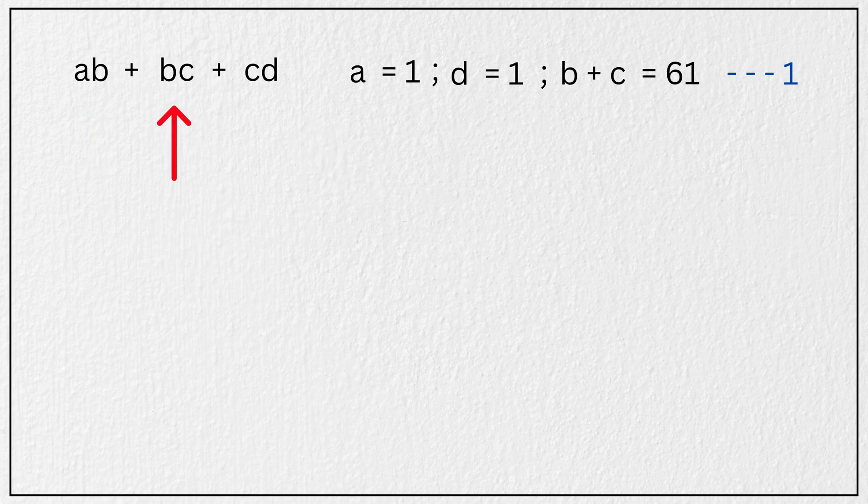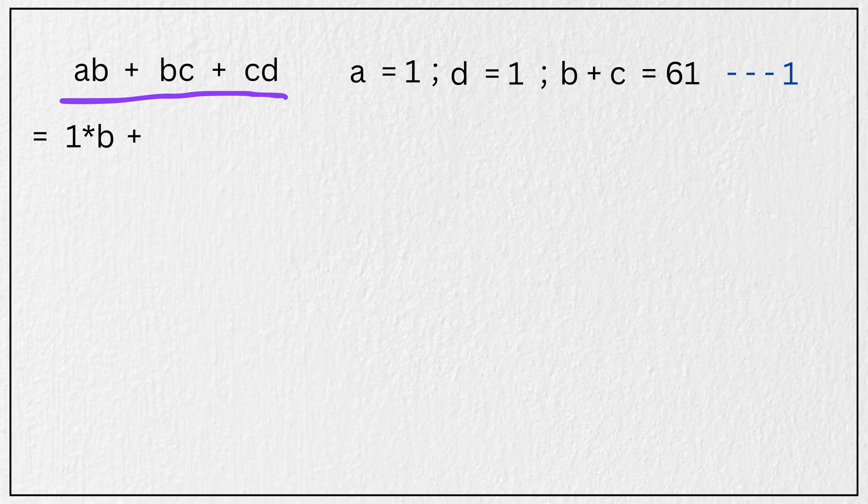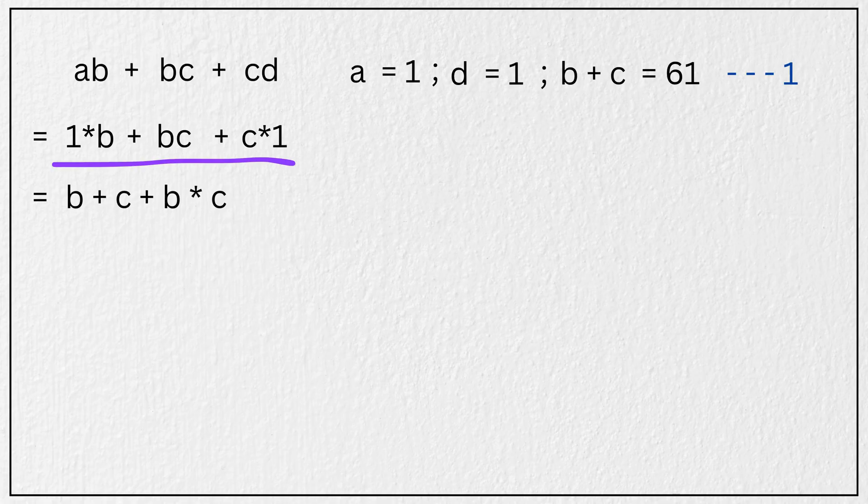A times B plus B times C plus C times D. With A and D equal to 1, this becomes 1 times B plus B times C plus C times 1. This simplifies to B plus C plus B times C. So our target is now to maximize this term only.